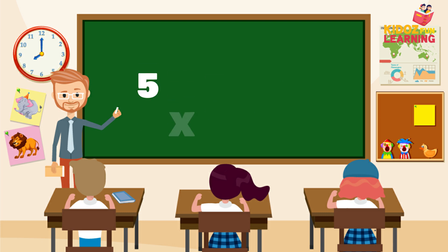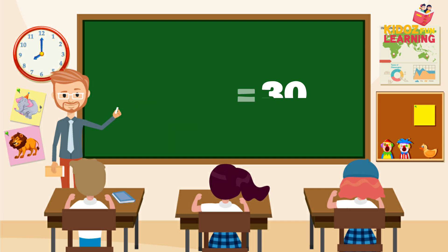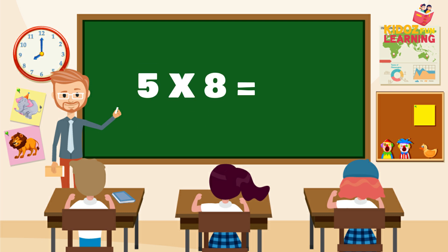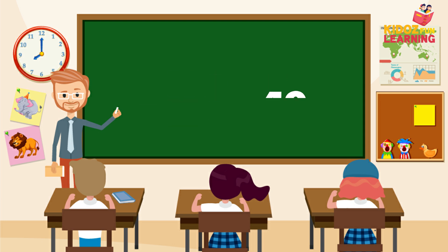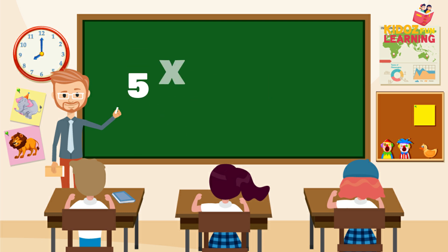5 times 6 is 30. 5 times 7 is 35. 5 times 8 is 40. 5 times 9 is 45. 5 times 10 is 50.